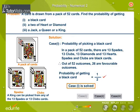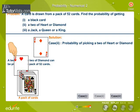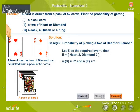Click on the buttons Case 2 or Case 2. Probability of picking a two of heart or diamond. Let E be the required event. Then, E is equal to set {heart 2, diamond 2}. There are 52 cards in a pack of cards. Therefore, N(S) is equal to 52, N(E) is equal to 2.